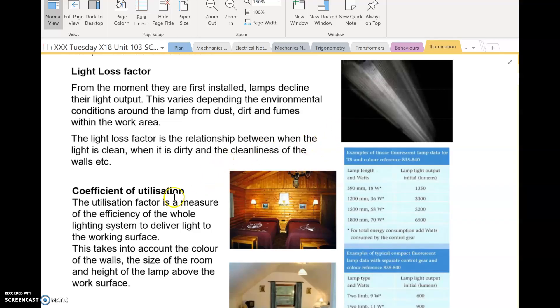The other type of factor is the coefficient of utilisation. Now this takes into account the colour of the room, the walls, the type of finish on the walls, are the walls reflective or matte finish, how many windows there are in a room. So the coefficient of utilisation is effectively what the light is going to be reflecting from within the room area.